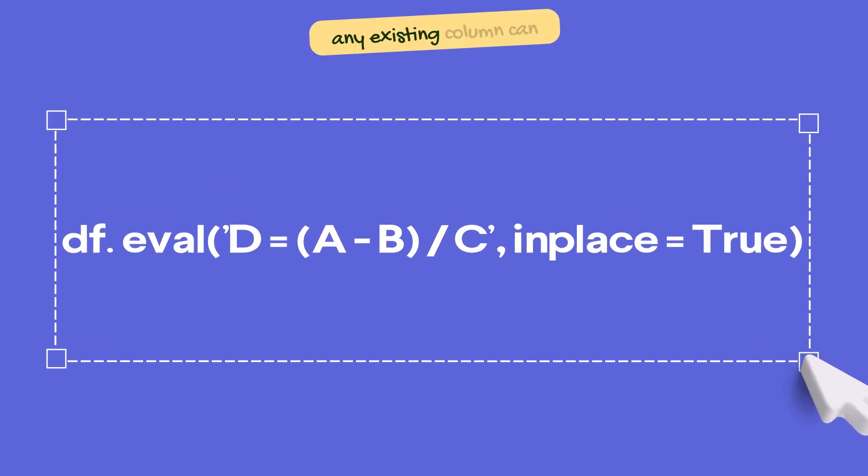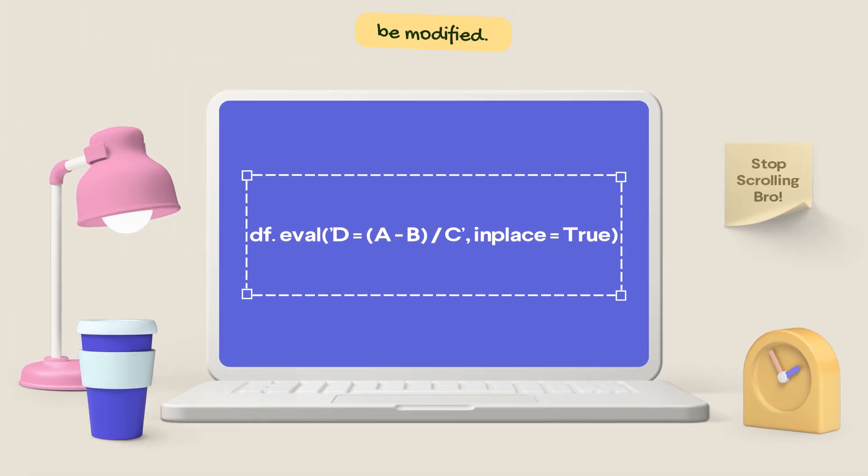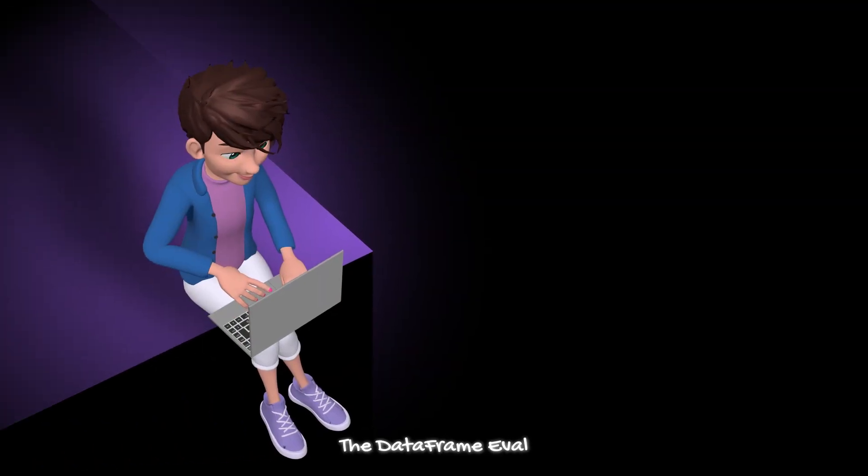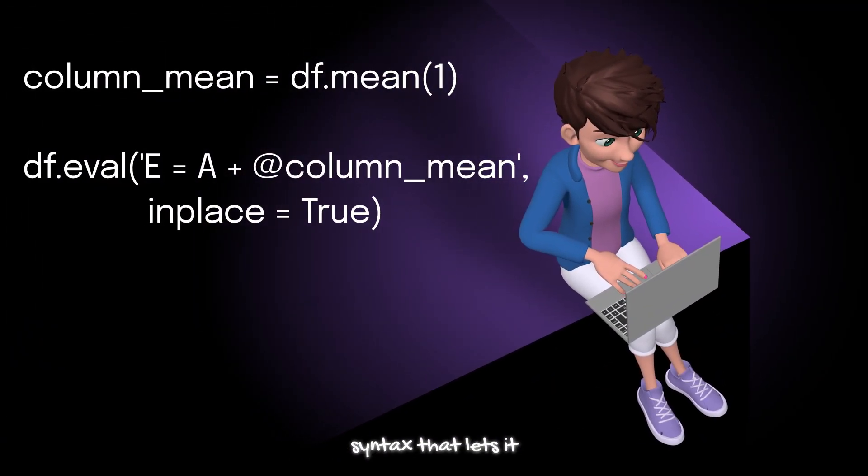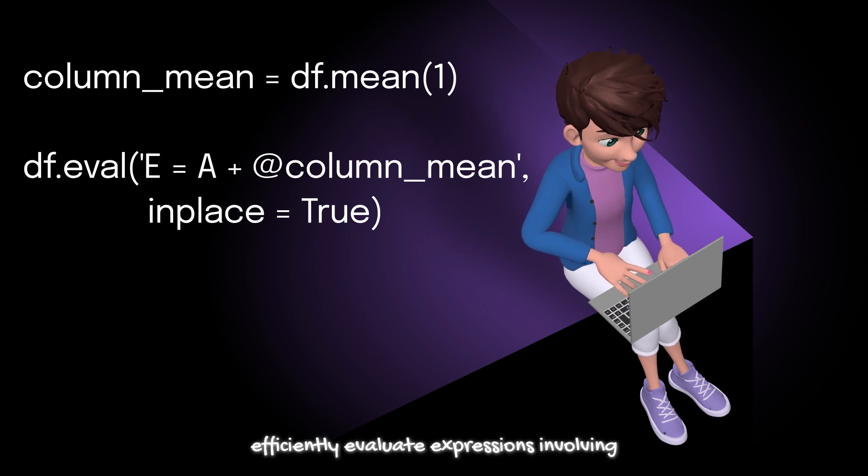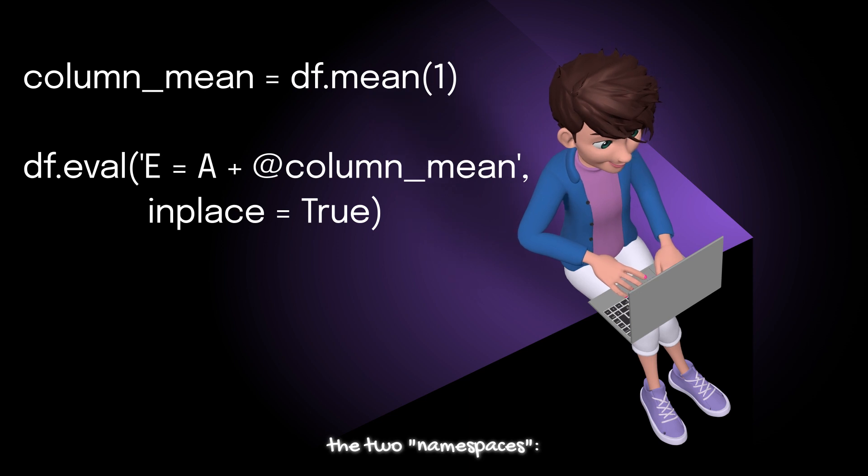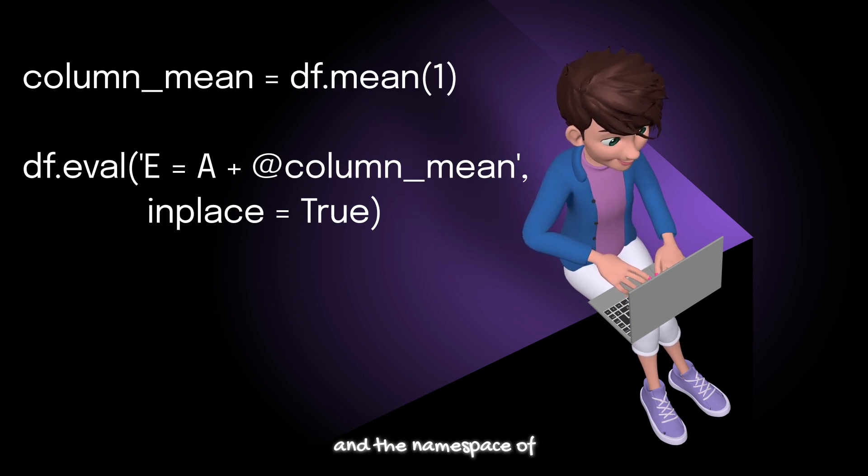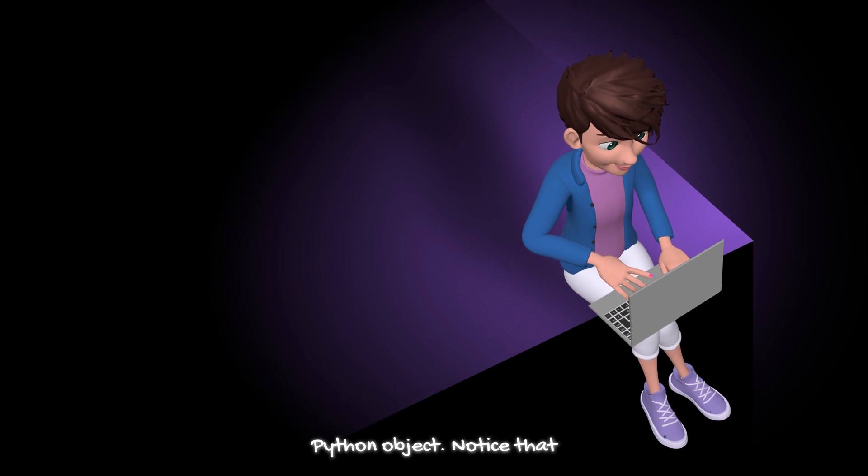In the same way, any existing column can be modified. The dataframe eval method supports an additional syntax that lets it work with local Python variables. The @ character here marks a variable name rather than a column name, letting you efficiently evaluate expressions involving two namespaces: the namespace of columns and the namespace of Python objects.